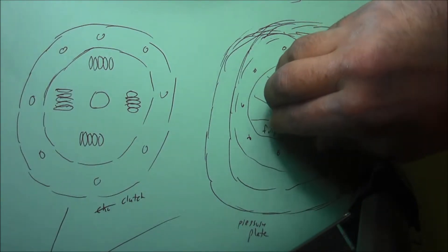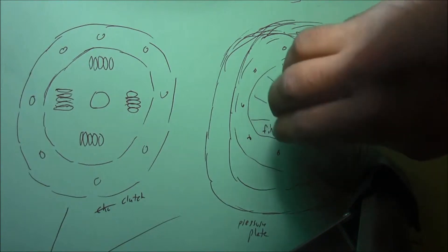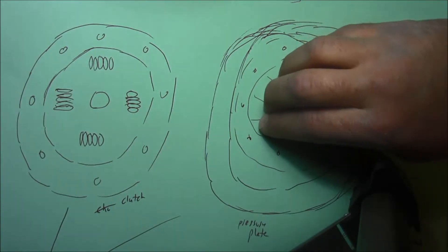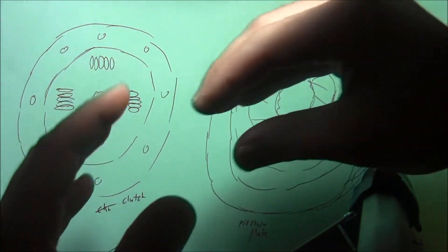When you push down the pedal, the bearing pushes in on these metal fingers which bend a little bit, which disengages your clutch.